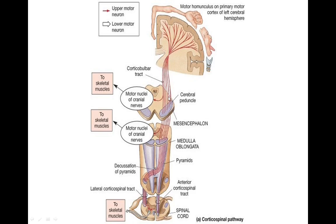They descend through the pons, where they are arranged in bundles — separated by the pontine nuclei into various bundles of corticospinal tract. They eventually reach the medulla, where they reunite and cross. A 90-degree turn occurs in the internal capsule, another in the midbrain, and finally in the lower medulla the majority of fibers cross, resulting in an elevation that looks like a pyramid — this is called the decussation of the pyramids, which is why these tracts are called pyramidal tracts.